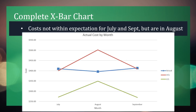If you've been following along, we should now have a complete X-bar chart. Looking at the chart, points that fall within control limits indicate discrepancies that can be expected by chance alone. In the months of July and September, actual cost fell above the upper limit, which is worse than expected. For the month of August, cost fell within upper and lower limits and therefore met expectations. To answer the initial question, costs are only within expectations for the month of August. This concludes the presentation. Thanks for watching.